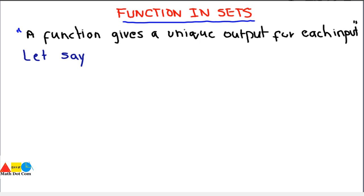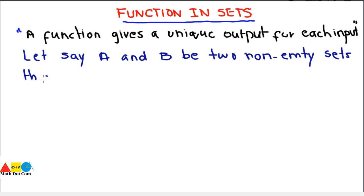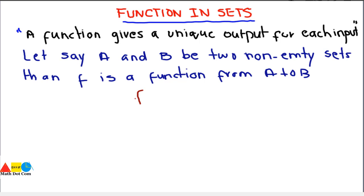Let's say A and B be two non-empty sets. Then f is a function from A to B, written as f: A → B. This is the notation or the representation of a function.